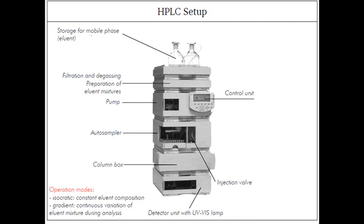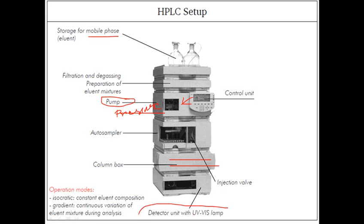In the HPLC setup, we have a reservoir for storing the mobile phase, followed by filtration and preparation. The pump generates the pressure, and a control unit regulates how much pressure is needed to transfer the mobile phase through the column. An auto-sampler loads the sample in small parts into the column via six-port injection ports. The column is placed in a column box where temperature is regulated — an optimum temperature is needed because ionic, polar, and non-polar interactions are all temperature-dependent. A UV-visible lamp detector is also present.